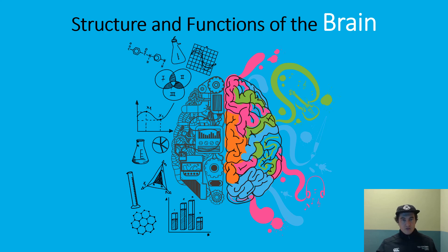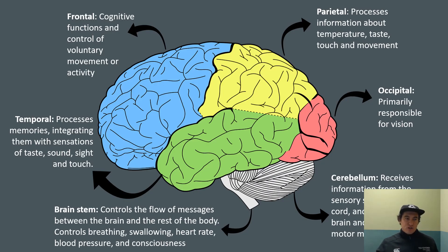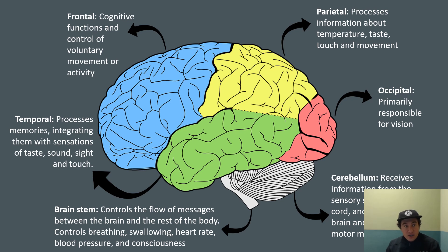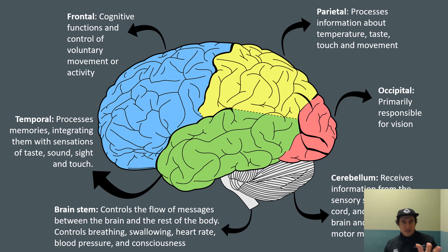We're going to go through structure and function of the brain. We have the frontal lobe at the front, temporal at the side, parietal at the top and back, and occipital at the very back — those are your four lobes. Then you have your cerebellum at the bottom back, and your brain stem which links your brain with your spine. Each of these has different functions, controlling different outputs like vision, processing information about temperature and taste. In the quiz this week, you'll need to identify these regions and describe the physiology of each region of the brain.